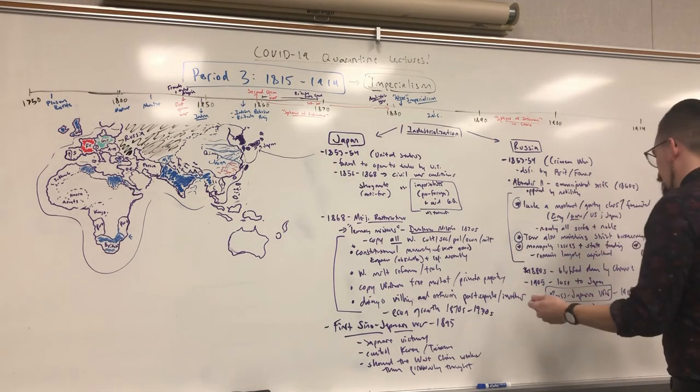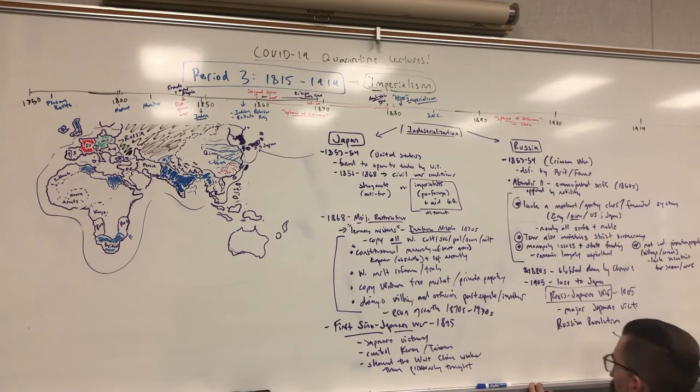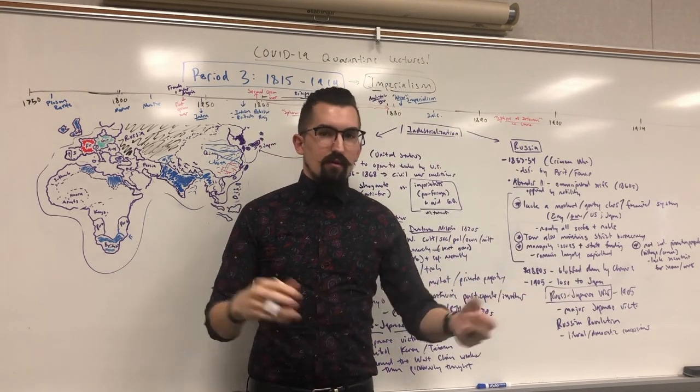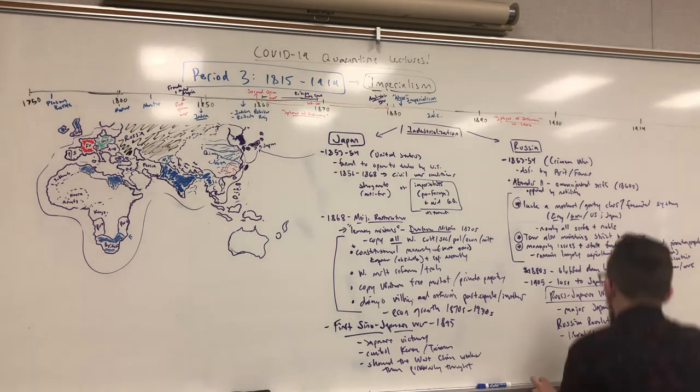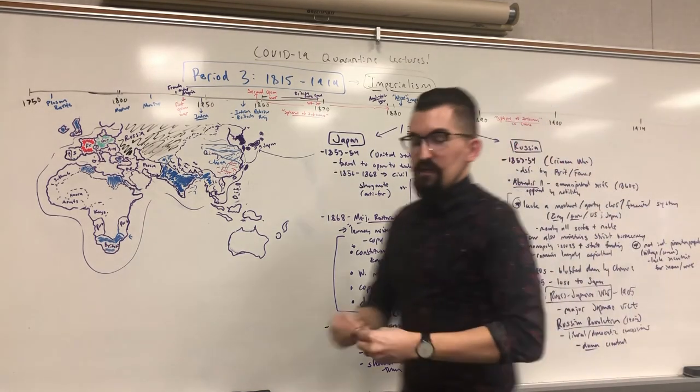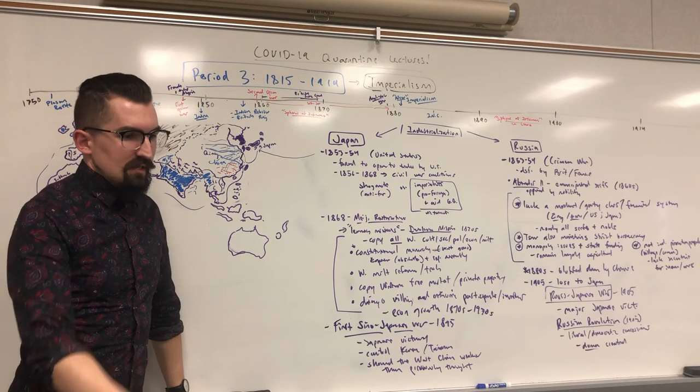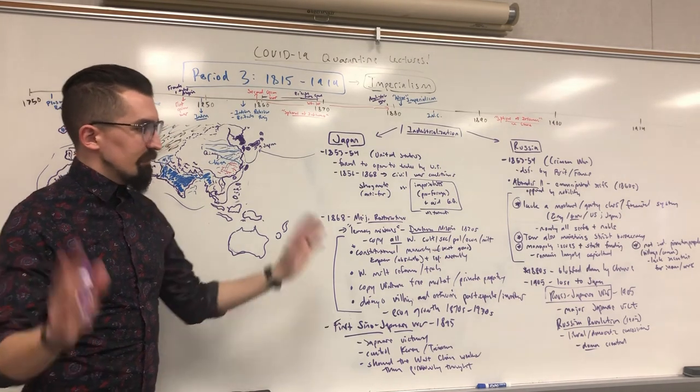But more importantly for future events and references, there's actually going to be a Russian revolution here. While the czar doesn't get overthrown, he is going to make several liberal democratic concessions, including for the first time not being an absolute czar and allowing the people to have a representative assembly, much like a parliament or a congress, with the Dumas. That's important later because they're going to be the main initiators of the Russian revolution in 1917, which ends in the Bolshevik revolution and the beginning of the communist Soviet Union. But that's a period four topic. And that's not on this test this year because of the COVID quarantine, but I will be making those videos anyway for future years, because these will be good for years to come as far as info goes.